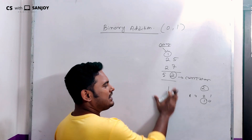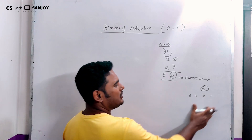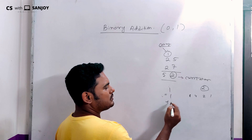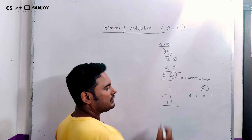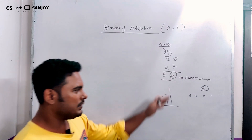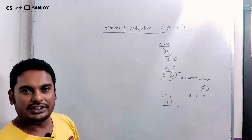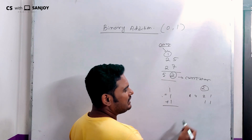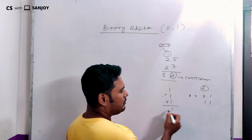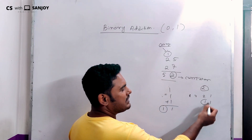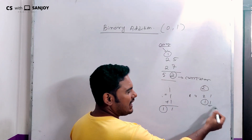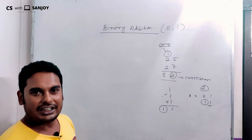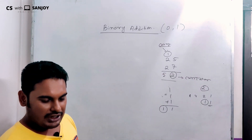Now let's look at this process. When we have 1 plus 1 plus 1, that equals 3. And 3 in binary is 1 1 — that is 2 and 1, which gives us sum 1 and carry 1. The rightmost bit is the sum.